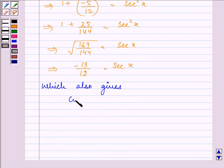Which also gives the value of cos x as -12/13. Further to this,